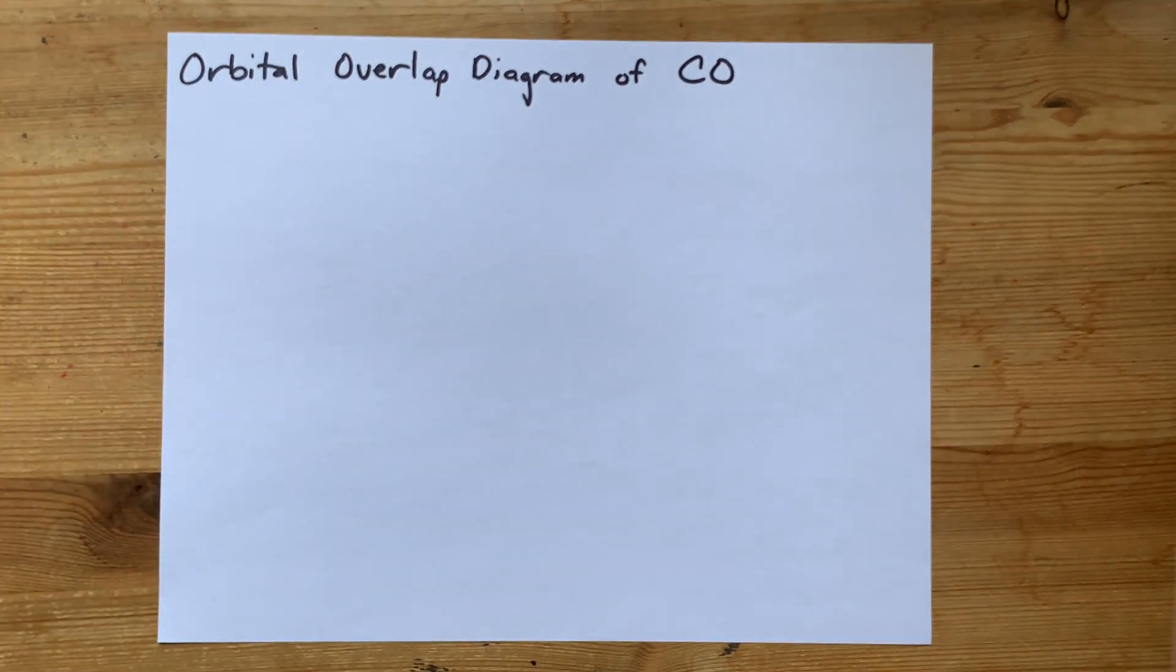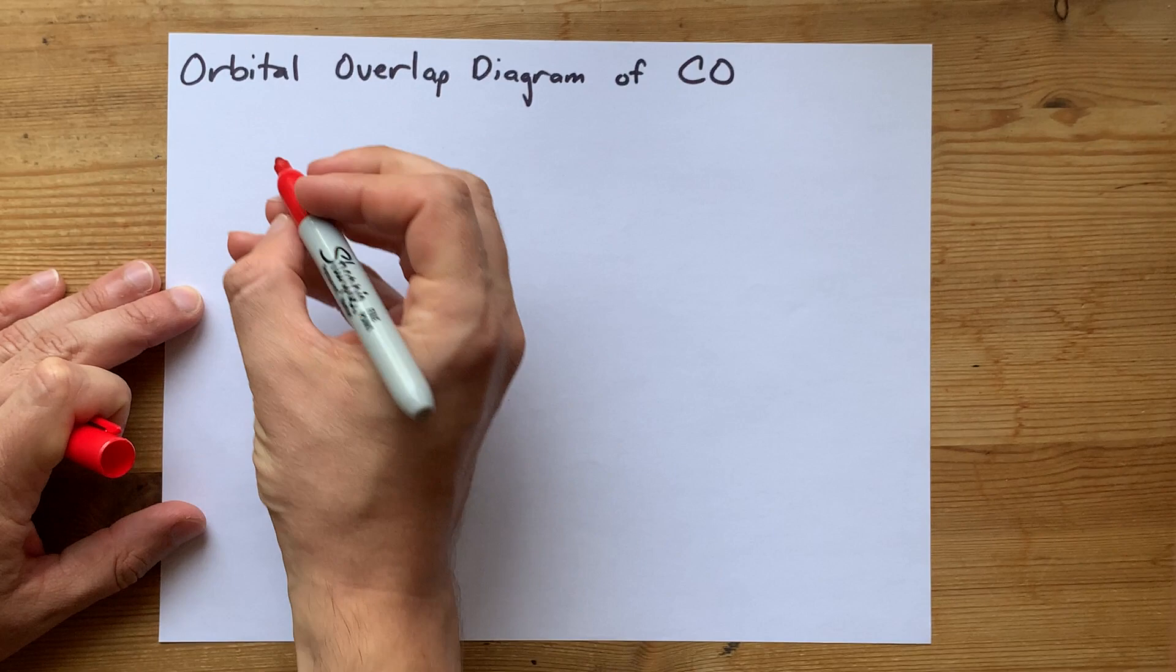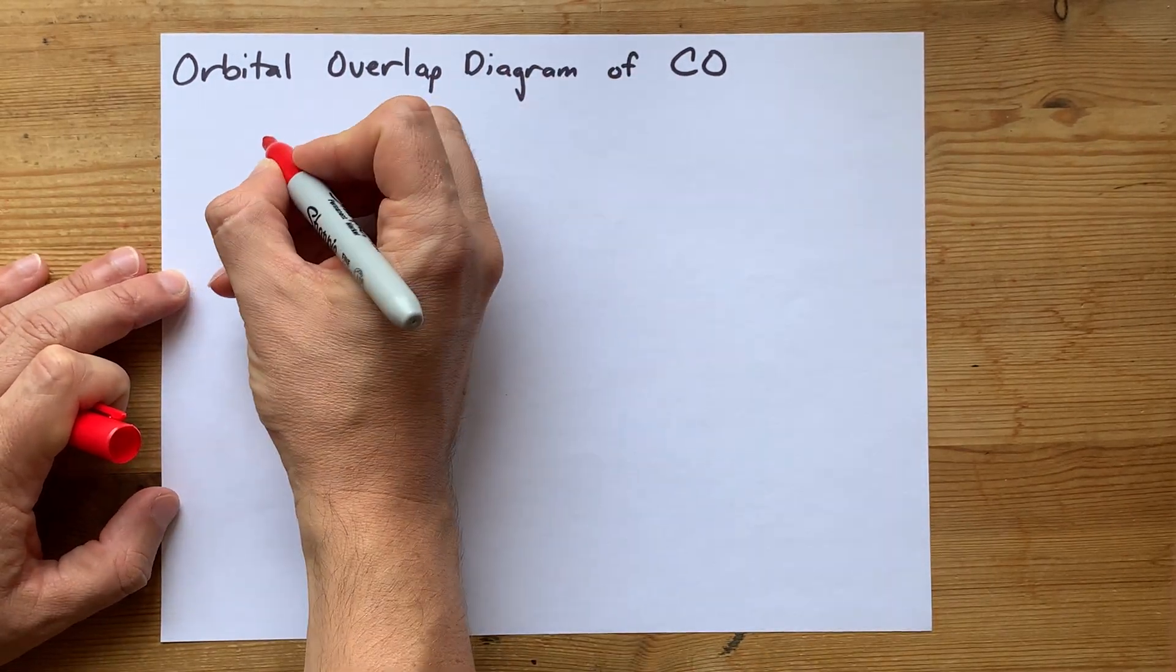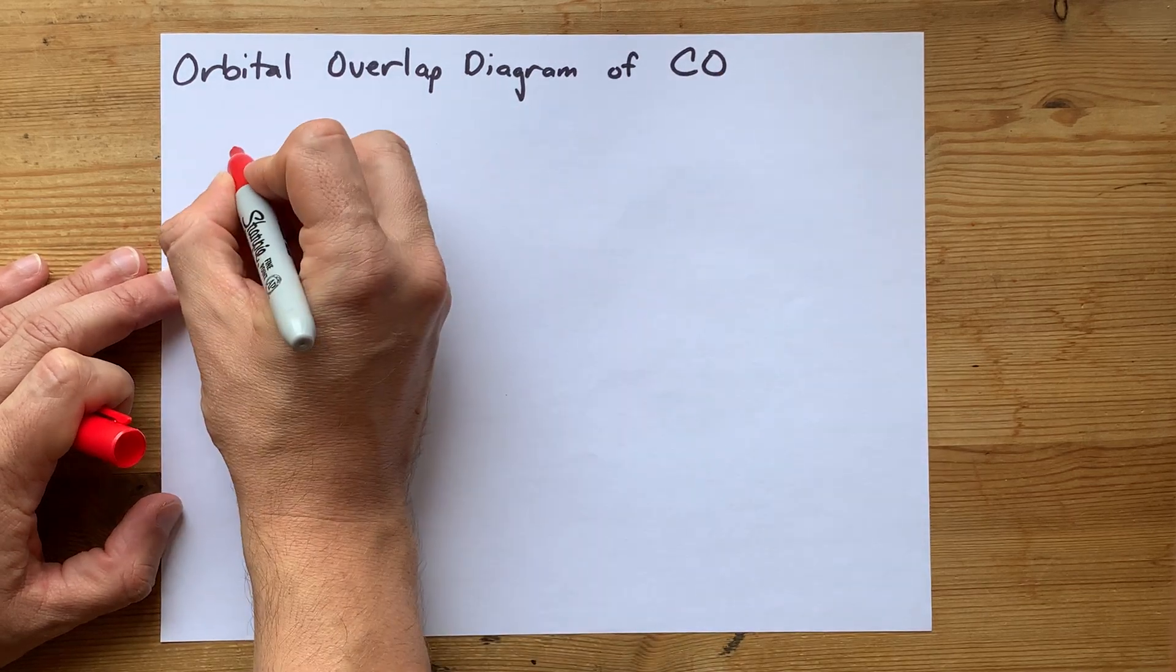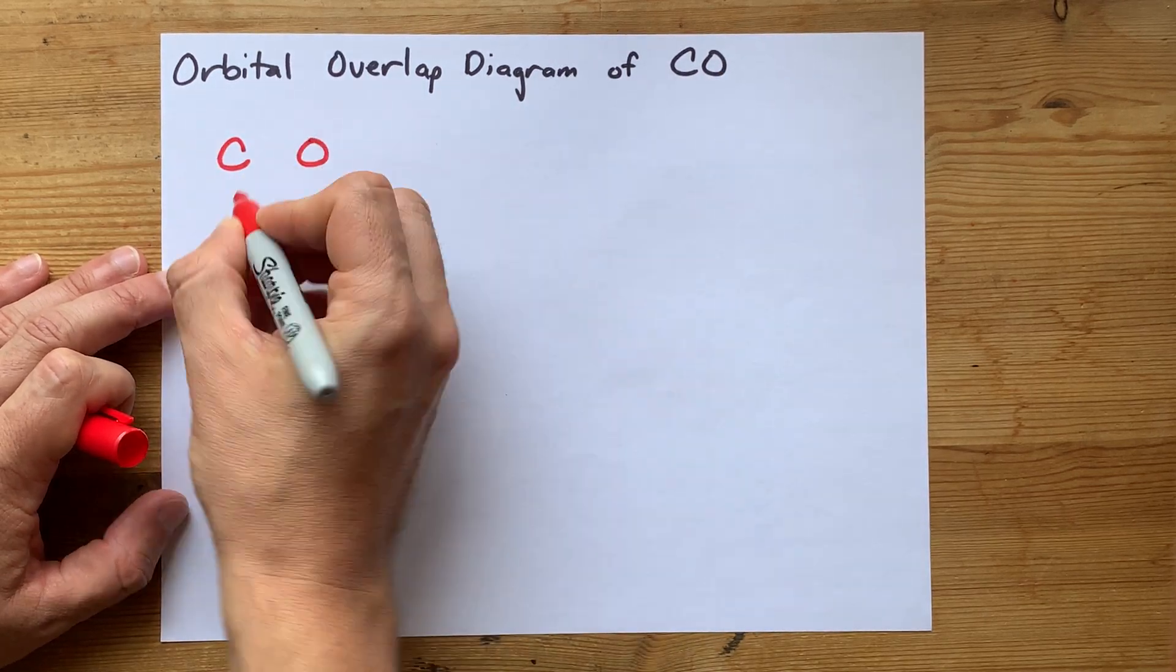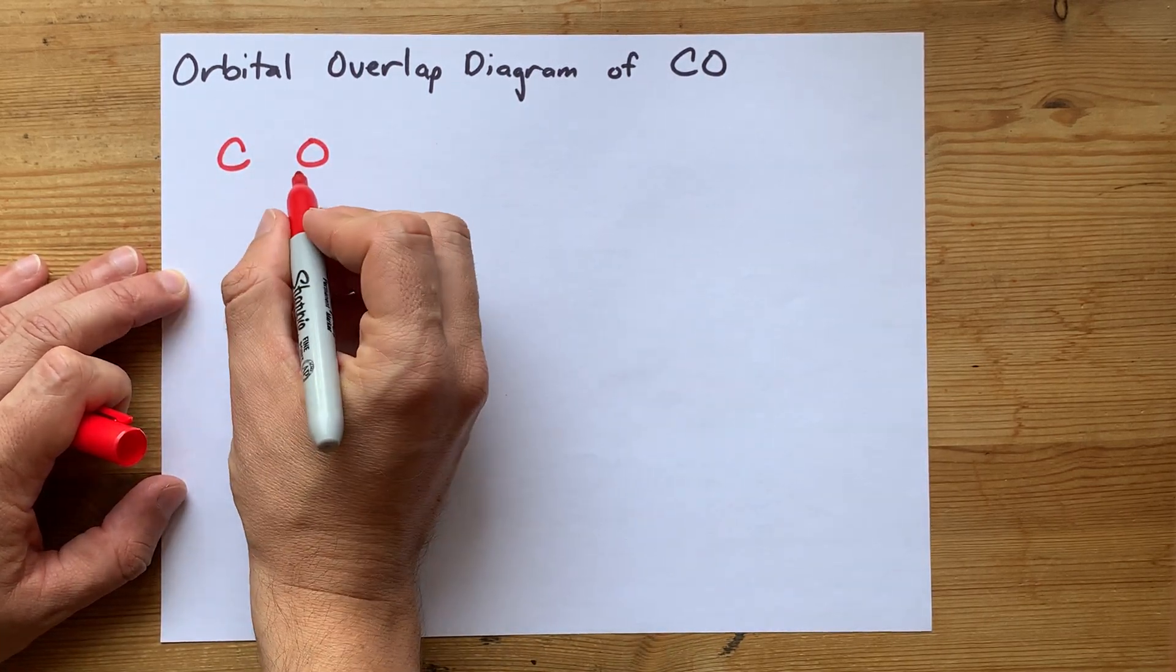Let's draw the orbital overlap diagram for carbon monoxide. Can you draw the Lewis structure for it? Carbon brings four valence electrons, oxygen brings six. So you're going to need ten valence electrons between these two.